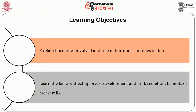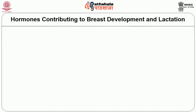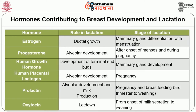You will also learn the factors affecting breast development and milk secretion, and the benefits of breast milk over cow's milk or other milks. We will now discuss the hormones contributing to breast development and lactation. The table shows the hormone activity in relation to lactation, the role of hormones in lactation, and the stages of lactation for each hormone. For example, estrogen plays a role in ductal growth, and its stage of lactation is mammary gland differentiation with menstruation.